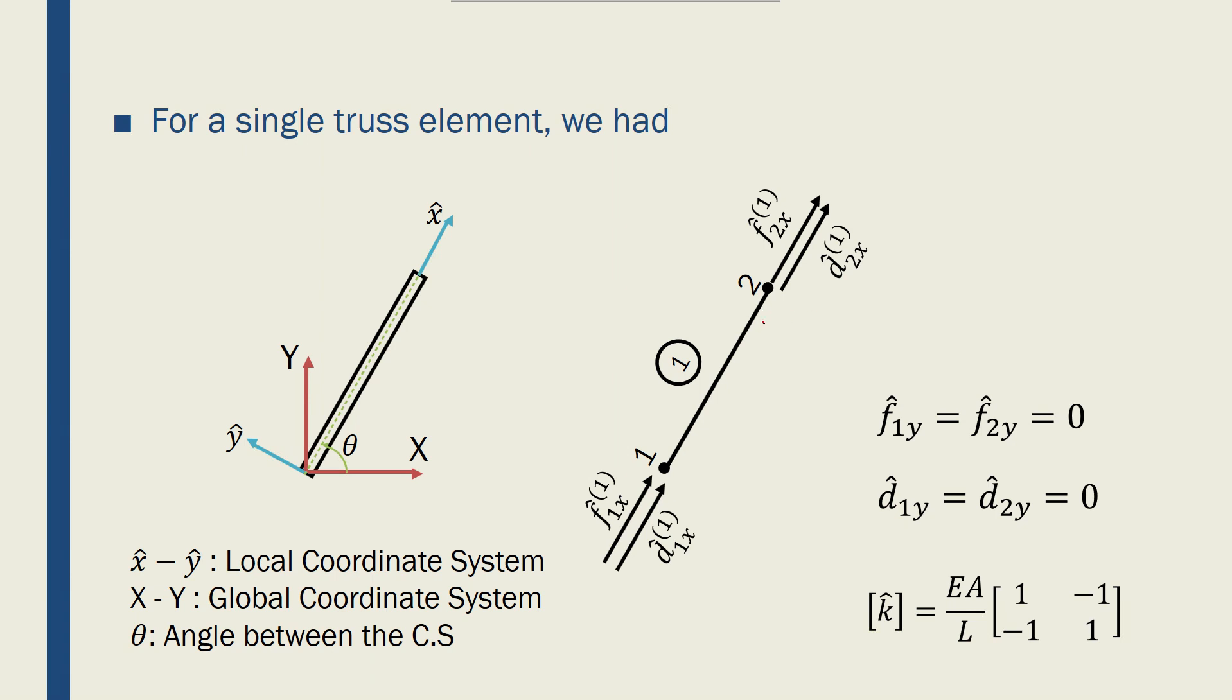And then we drew the free body diagrams for the element, and we showed the forces and displacements of the two nodes. So this is one element, and it has node 1 and node 2 there.